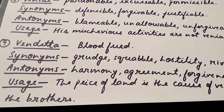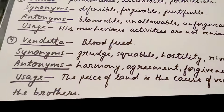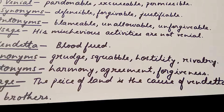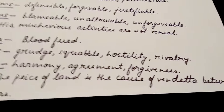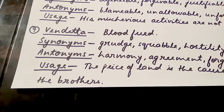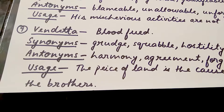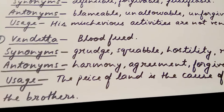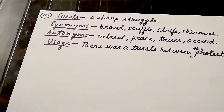The next word is 'vendetta', which means a blood feud. Its synonyms are 'grudge', 'squabble', 'hostility', and 'rivalry'. Its antonyms are 'harmony', 'agreement', and 'forgiveness'. Usage: 'The peace of land is the cause of vendetta between the brothers.' Trick: relate it to 'one' and 'devta' (deity) — imagine two groups fighting for years over which deity belongs to them.